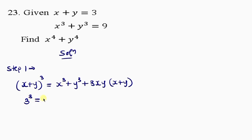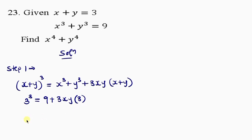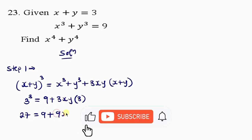x cubed plus y cubed is also given to us, which is 9. So we put a value of 9 there, plus 3xy. x plus y inside the bracket is 3, so we put 3 there. This simplifies as: 3 to the power of 3 is 27, equal to 9 plus 3xy times 3, which gives 9xy.